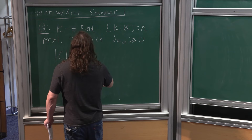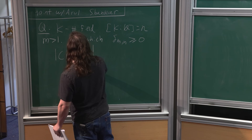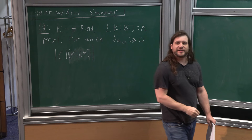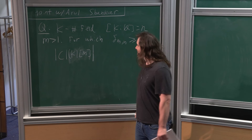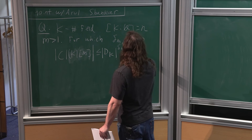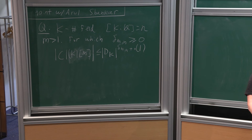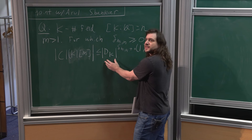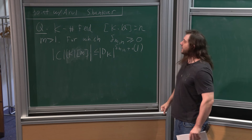If you look at the class group of K, which is itself of course a finite abelian group, and you isolate the M-torsion piece of it only, this is bounded from above by the absolute value of the discriminant of K to the power of δ_MN plus a little fudge factor of O(1) here. With the discriminant of K as our measuring stick, specifically we're looking at powers of it—what's the best upper bound you can get?